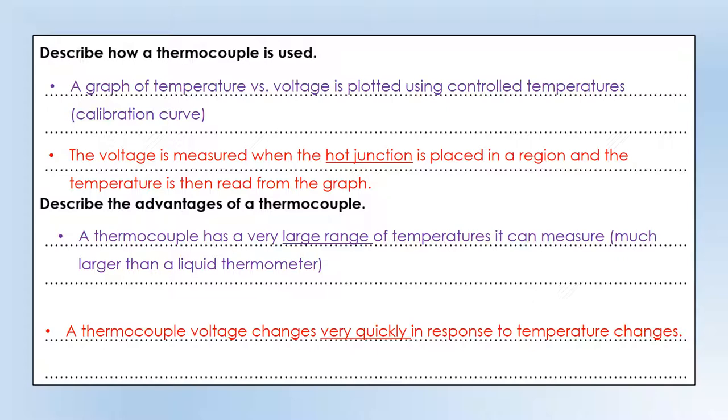A thermocouple voltage also changes very quickly in response to temperature changes. Far quicker than a material like a liquid will expand. So when you're using a liquid thermometer you put it in and you have to wait for it to adjust. Whereas a thermocouple will change almost straight away which makes it very suitable for measuring rapidly changing temperatures. So those are the reasons you choose a thermocouple. You're measuring very high temperatures or you're measuring quickly changing temperatures. But it isn't any more accurate than a liquid-based thermometer. So it's not better for those reasons, it's only these two reasons it works.